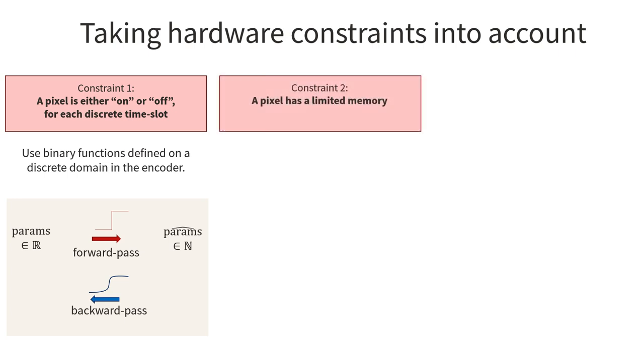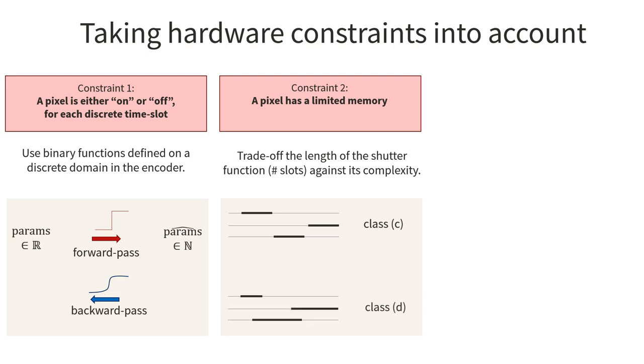A second constraint is the limited memory in each pixel. Each pixel has to encode the shutter function locally for communication bandwidth reasons. Given this limited memory, a trade-off exists between the complexity of the shutter function to realize—the more parameters, the more complex—and the number of total slots one wants to implement for a given exposure. For instance, a shutter function of class C has fewer parameters to encode than a function of class D. It is enough to encode the starting time of the bump in class C, while class D needs the starting time and the end time, or alternatively the duration. Hence, class C is less complex and can thus encode more slots.